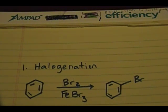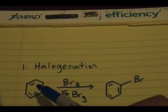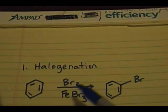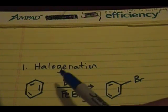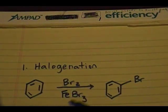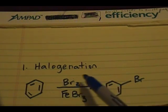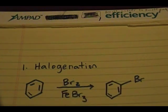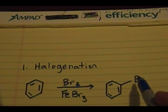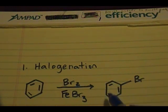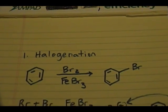Halogenation starts off with an aromatic ring. The reagents used are Br2 and FeBr3. Since it's halogenation, you could also use Cl2 and FeCl3. Since there are no substituents on the aromatic ring to start with, the bromine can add to any carbon of the aromatic ring — it's not going to discriminate at what position it will be added.